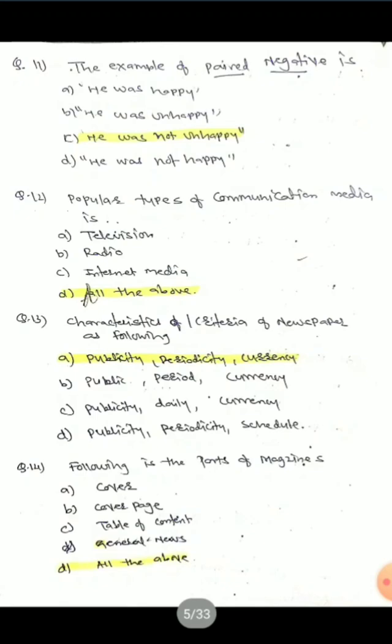Regarding language and style of writing for a news story or magazine story — one important point is to avoid 'pair negatives.' For example, 'he was not unhappy' is a pair negative and should be avoided. You should write either 'he was not happy' or 'he was unhappy.' Avoid pair negative words because 'not' and 'un-' carry the same meaning.